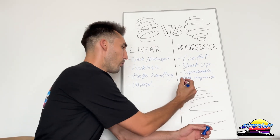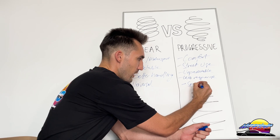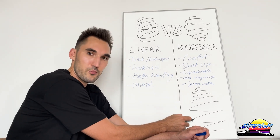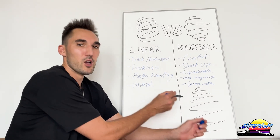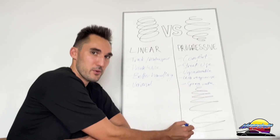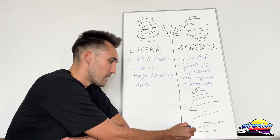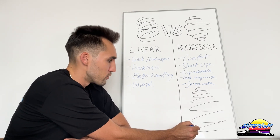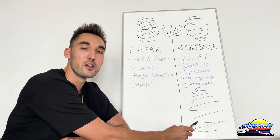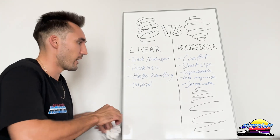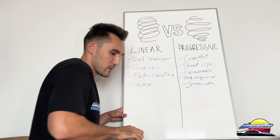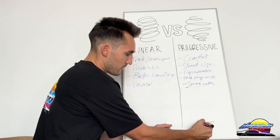There are two other downsides to progressive springs. First, you can't really calculate a consistent spring rate because it changes as you compress. That makes it extremely difficult to calculate what the spring rate actually is — it changes as the spring compresses. So it's very difficult to find replacement parts for these. Second, they're not usually a universal size like linear springs are, so you can't really just pull out a progressive spring and put in a linear spring in many cases.